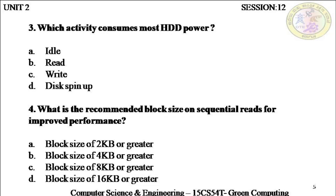Which activity consumes most hard disk drive power? When we were dealing with this topic, we actually saw a simple bar chart where there were three activities of the hard disk: disk idle, read and write, and disk spin up, with energy measured on the Y axis. In the idle state, the CPU is not executing any process actively, so that state is not going to consume the most amount of power. The read and write state consumes a lot of power, but it is disk spin up, option D, which consumes the most power, because it involves the mechanical disk spin up to move data from the hard disk drive to the processor.